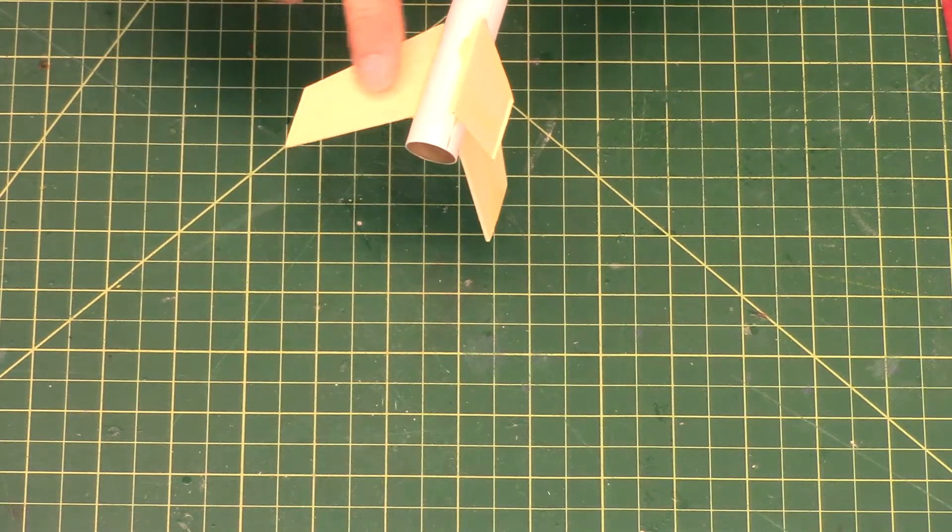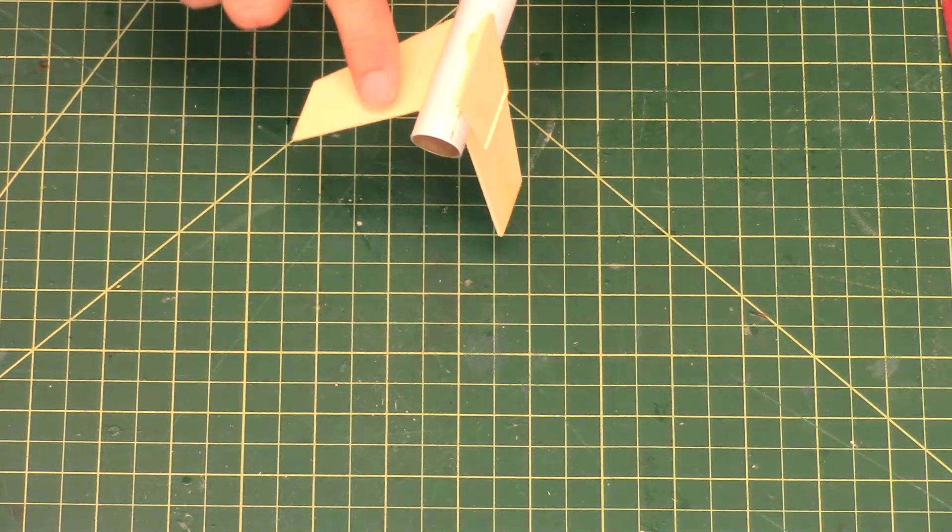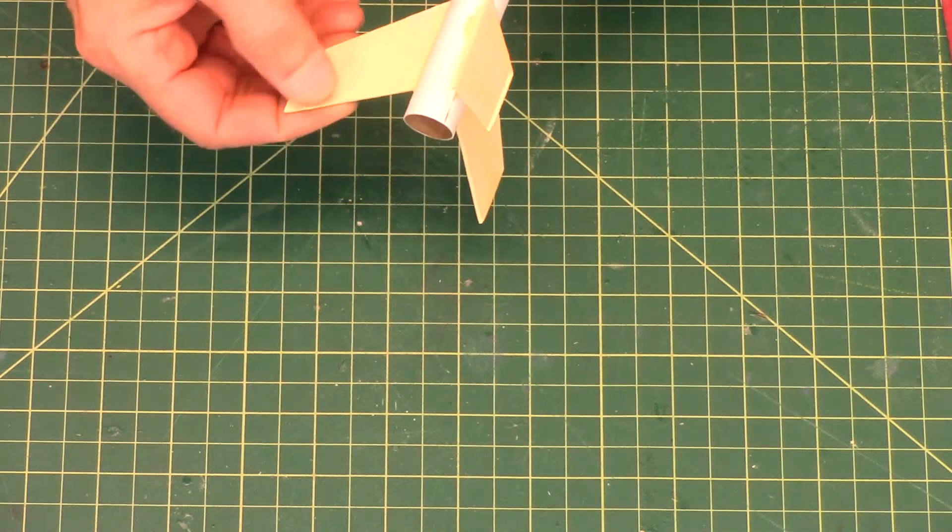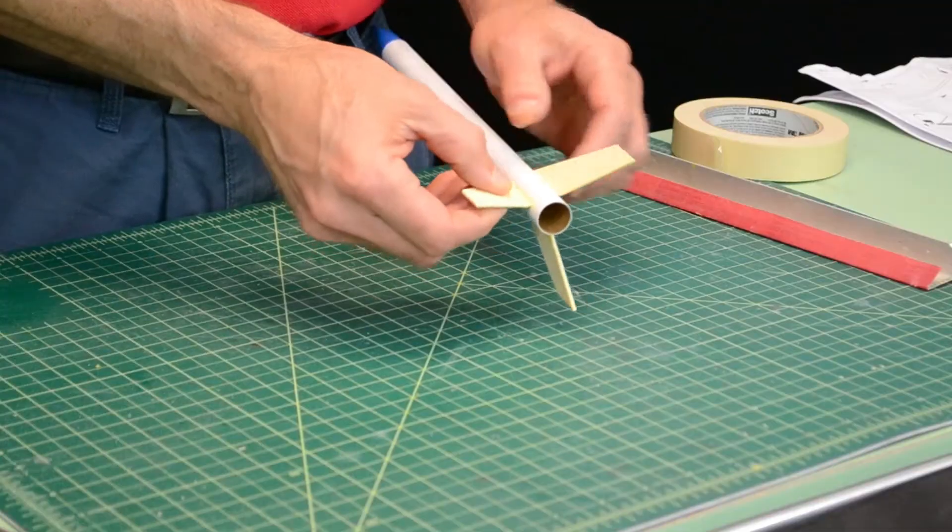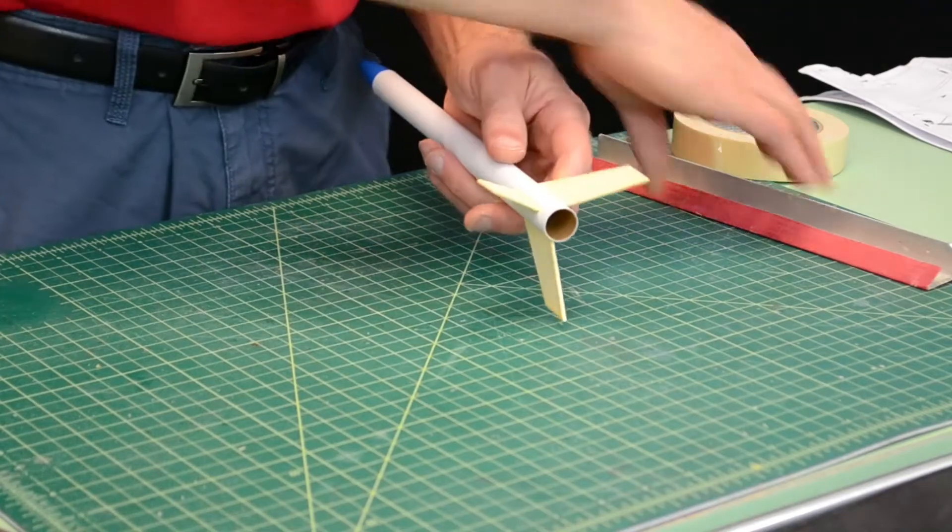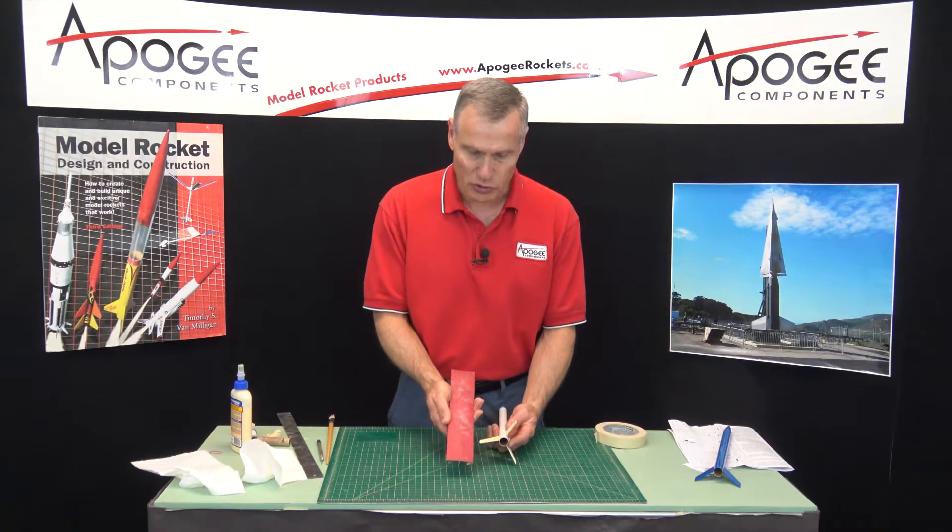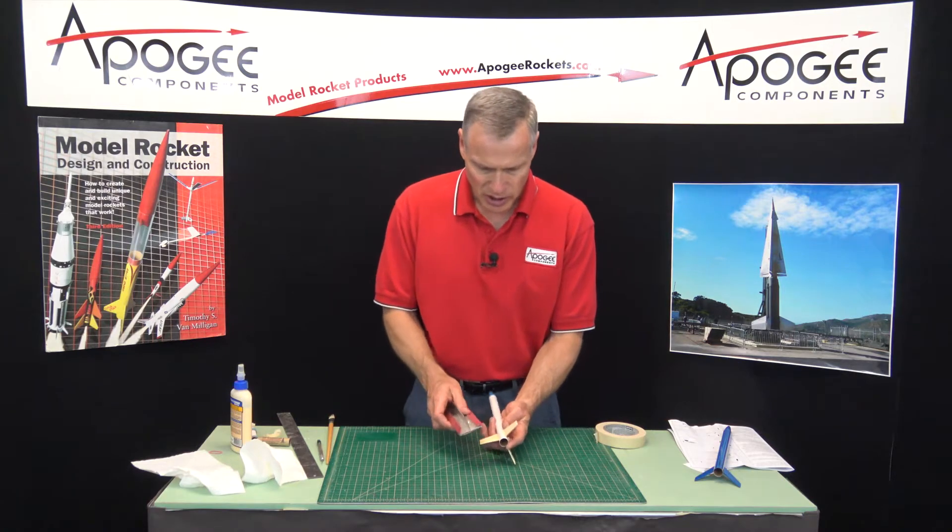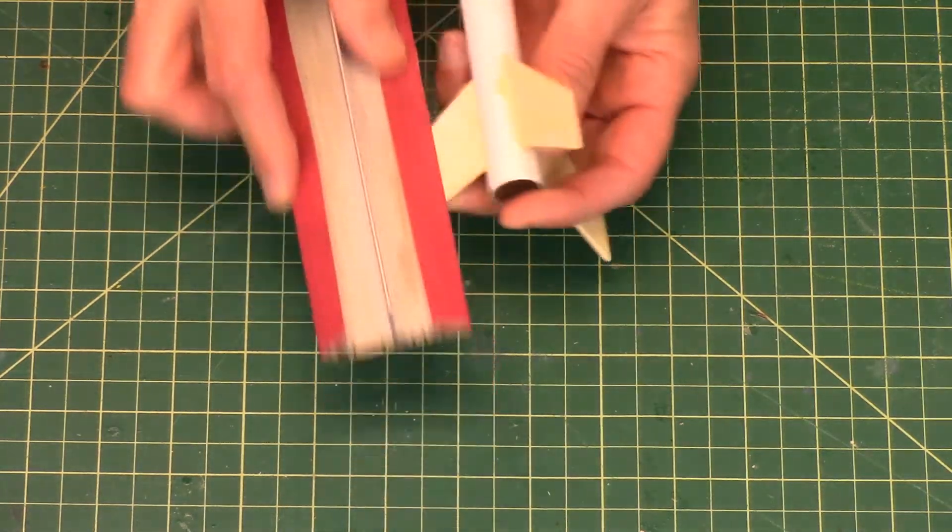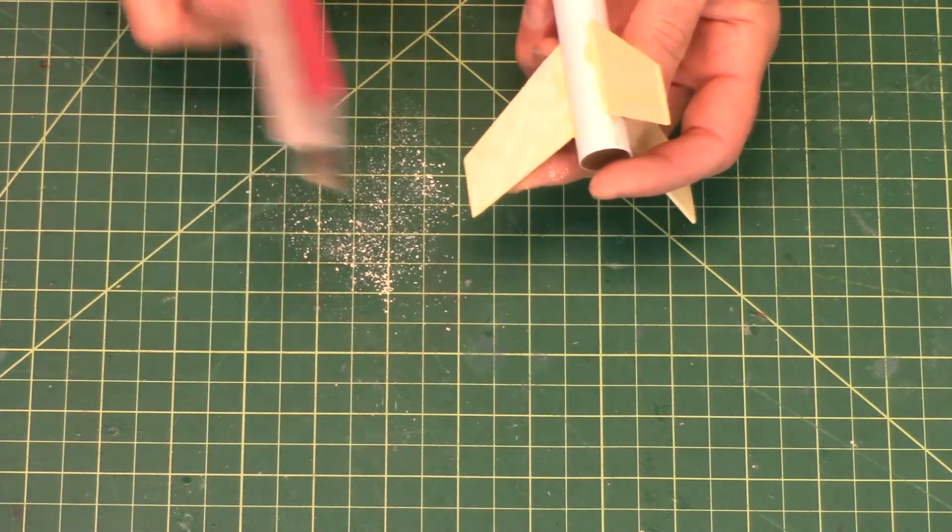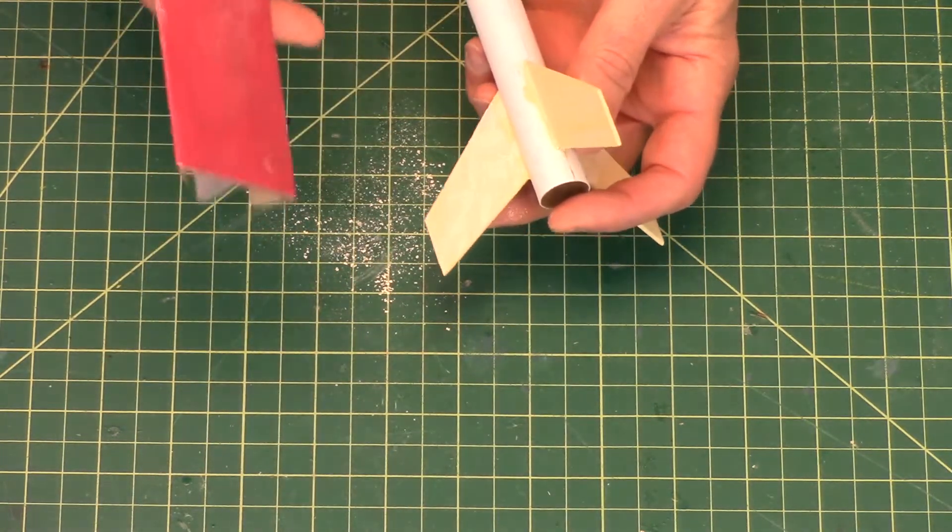In our previous episode we had applied the fill and finish onto the rockets and right now it's pretty rough, but everything is nice and dry so we can sand it. I have about 220 grit sandpaper here, and when you sand this, see that it makes a lot of dust and that's good.